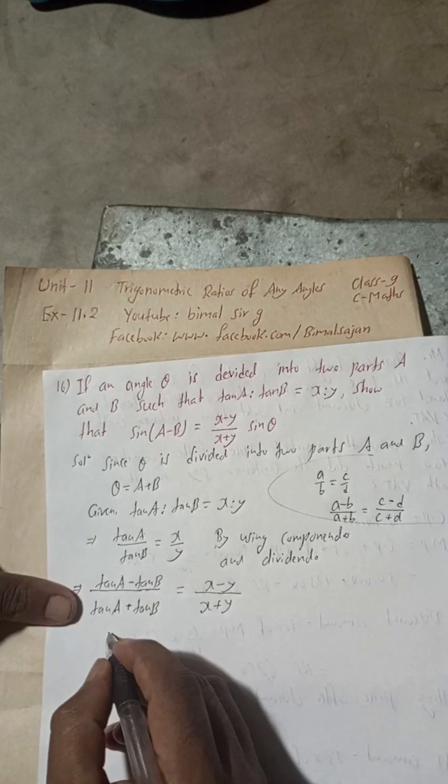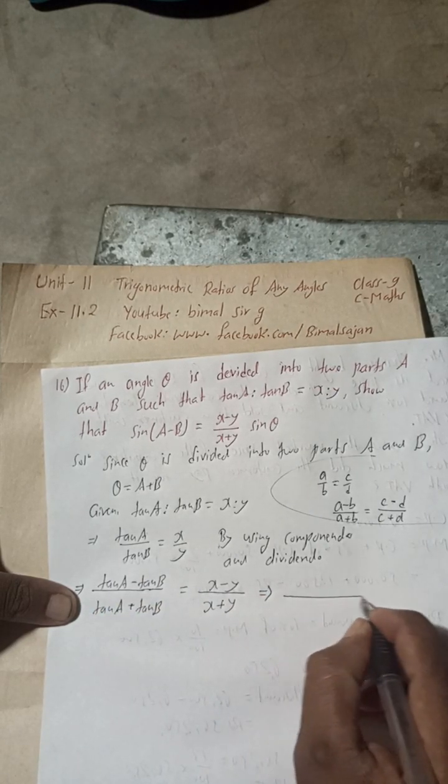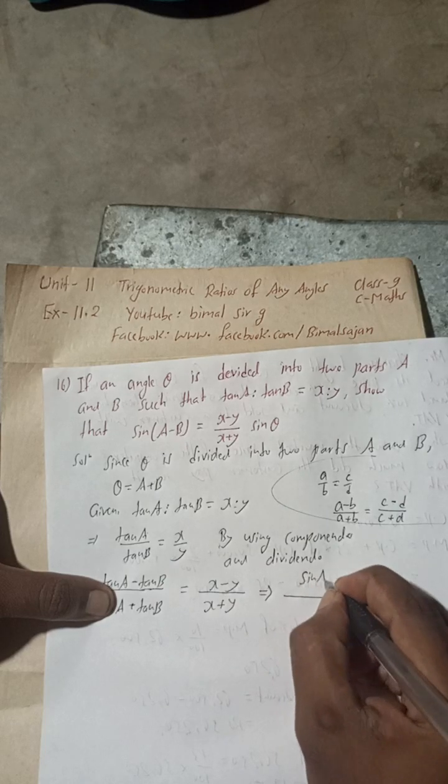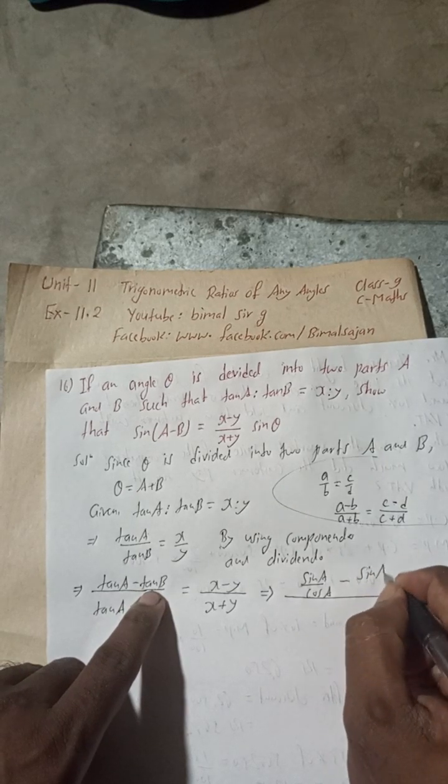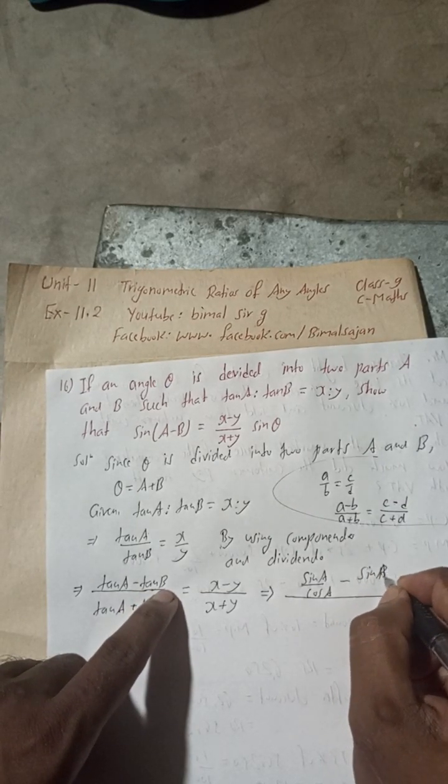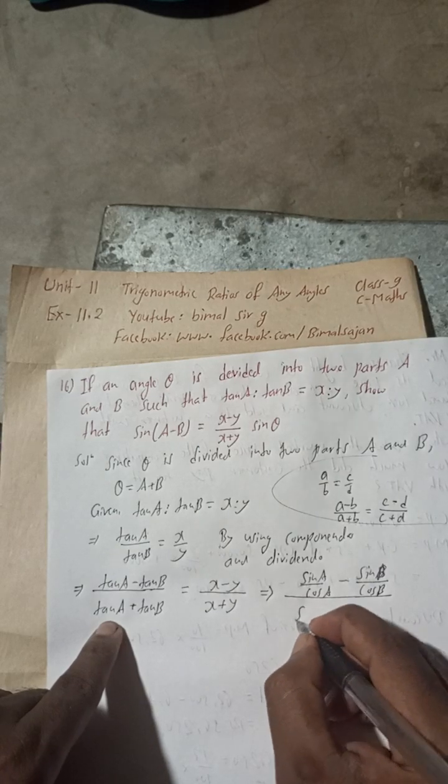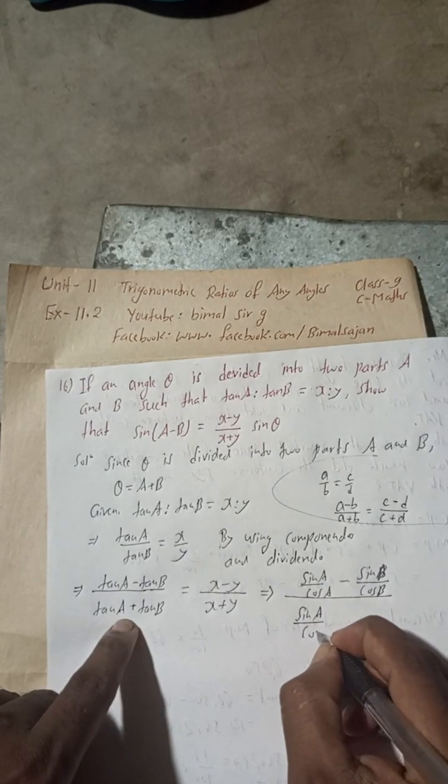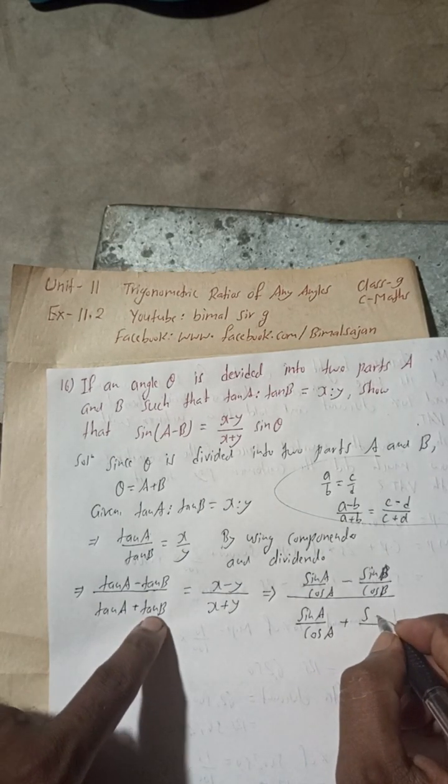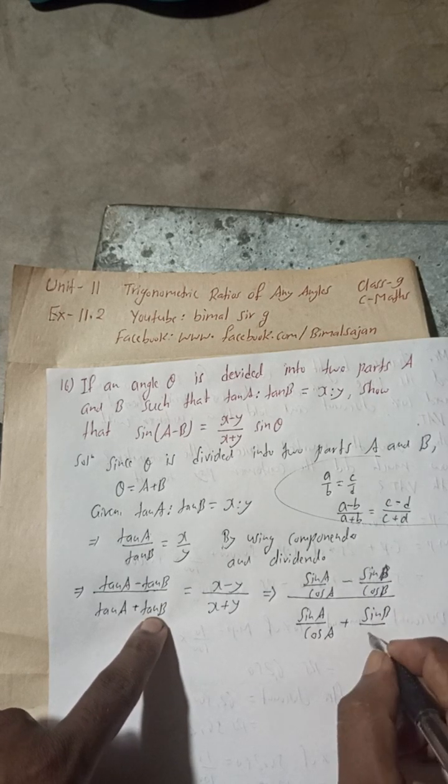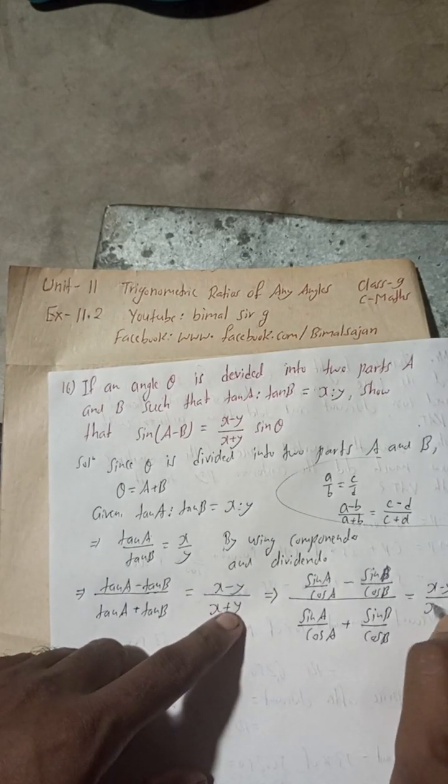This implies tan A can be written as sin A by cos A minus tan B can be written as sin B by cos B, divided by sin A by cos A plus sin B by cos B equals (X-Y)/(X+Y) as it is.